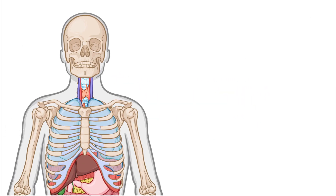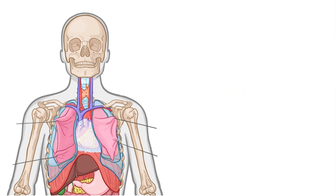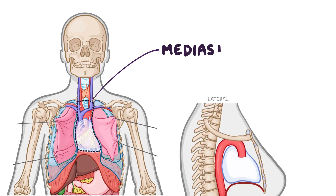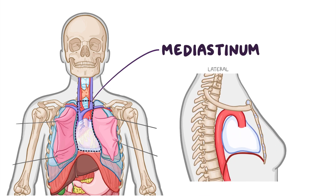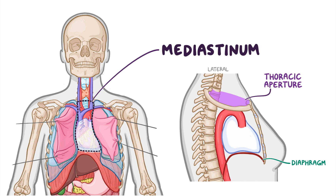We all know how important the heart is, but everyone forgets about the mediastinum, which is the area between the two lungs where the heart actually sits. The mediastinum doesn't just house the heart, but many important structures in the thoracic cavity, from the superior thoracic aperture down to the diaphragm. So let's take a closer look at the clinical conditions that can affect the mediastinum and the structures within it.